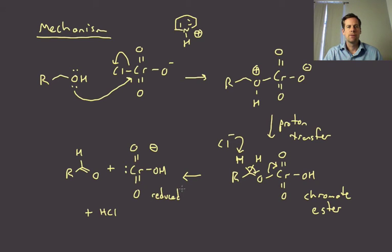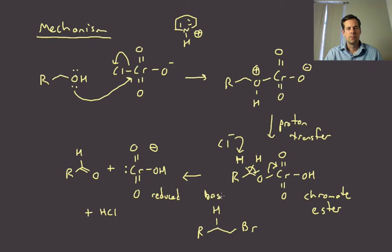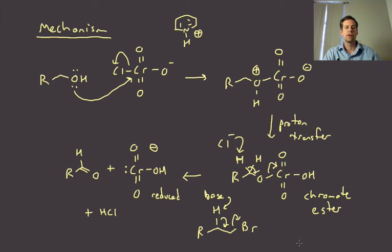This final step — pulling off a proton, electrons dumping down, and then expelling a leaving group — is actually very analogous to an E2 elimination to form an alkene, where a base pulls a proton, electrons dump down, and kick off a leaving group to form a carbon-carbon double bond. Here we're doing the same thing, except we're forming a carbon-oxygen double bond and the leaving group is the chromium species.